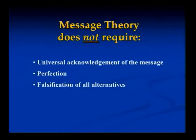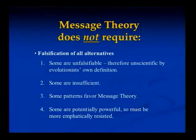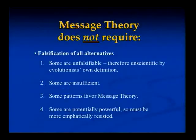Message theory does not require certain things. It doesn't require universal acknowledgement of the message — that's not a design goal. It doesn't require perfection, partly because perfection is very difficult for us to define scientifically. As a scientific theory, it requires very good design — optimal design, something like that. It doesn't require falsification of all alternatives, because some evolutionary theories are simply unfalsifiable; they're so flexible they can adapt to anything. Also, some evolutionary theories are insufficient — such as the idea that certain characteristics are lost during evolution — which is not sufficient to explain macroevolution. And in fact, some patterns favor message theory.